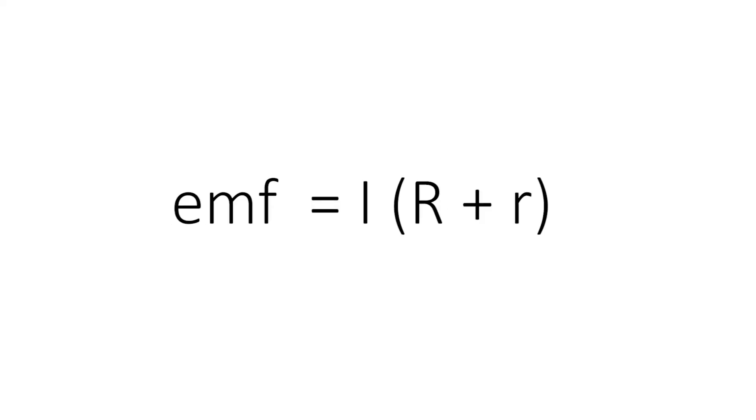We now use the formula EMF is equal to the current multiplied by the total resistance which is big R plus small r.